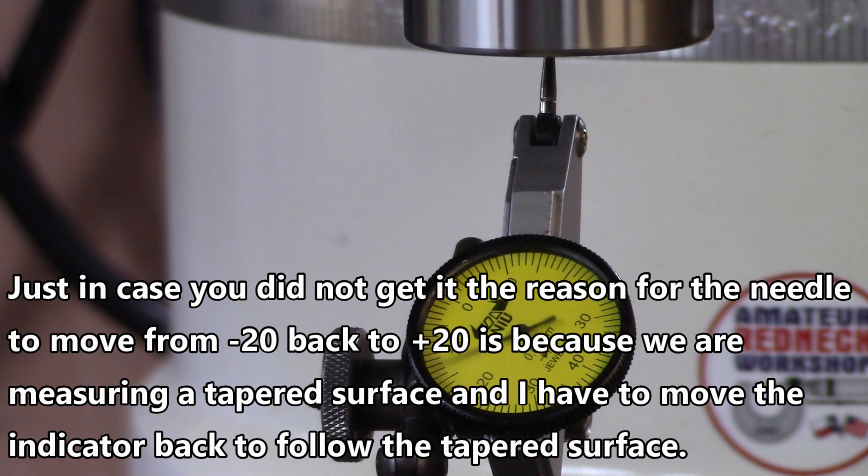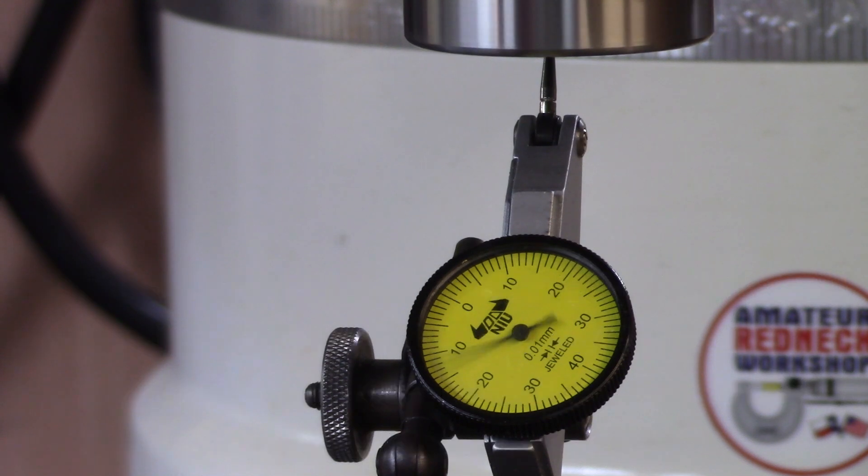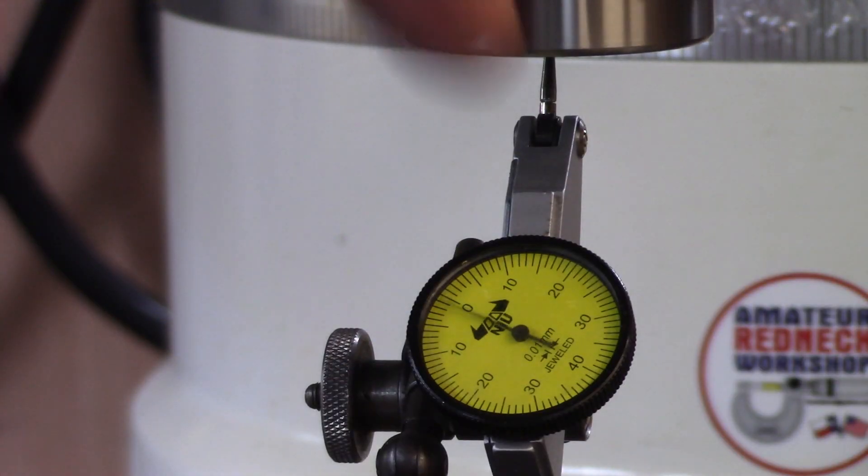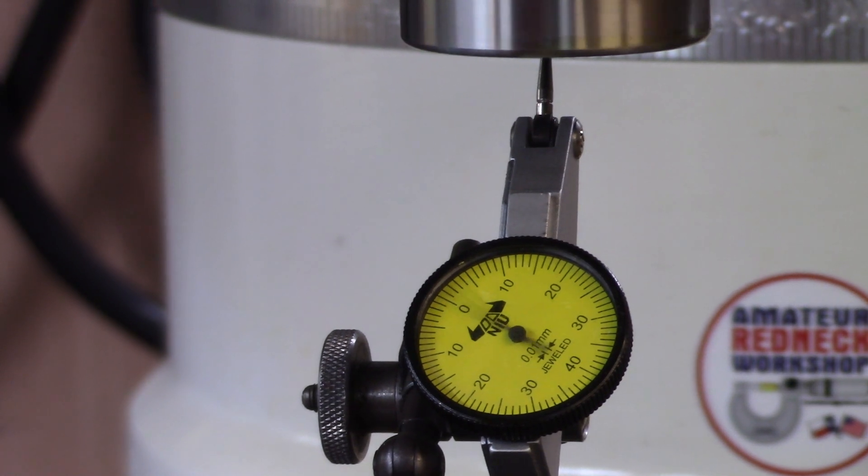Now we're right at the opening here where the taper gets really bad or big or whatever. But this is beyond the space where the collet touches. This is the tapered part that doesn't touch the collet. So we'll stop and put the collet in.